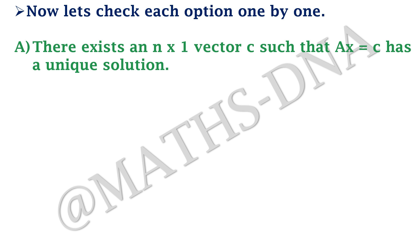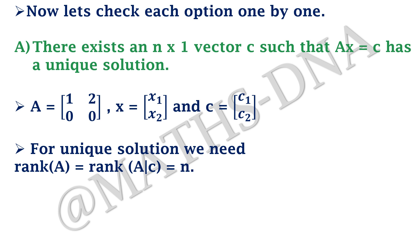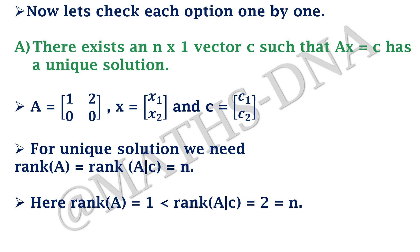Checking Option A: for a unique solution we need rank(A) = rank([A|C]) = N. With our A having rank 1, and N = 2, we can never achieve rank(A) = N regardless of C. So Option A is not correct — we cannot find an n×1 vector C such that AX = C has a unique solution.